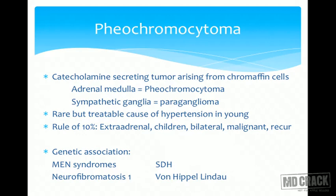Coming to pheochromocytoma — a catecholamine-secreting tumor that arises from the adrenal medulla. If it arises from sympathetic ganglia, it is called a paraganglioma. Clinically they are the same entities. The famous rule of 10%: 10% of pheochromocytomas are extra-adrenal, 10% occur in children, 10% are bilateral, 10% of the total are malignant, and 10% tend to recur.